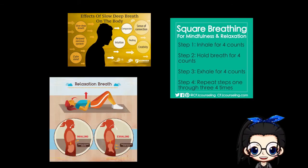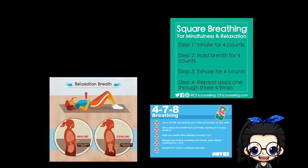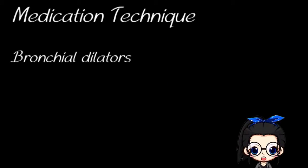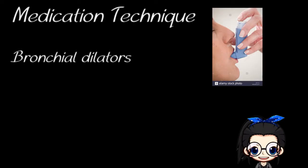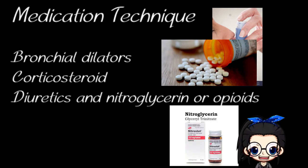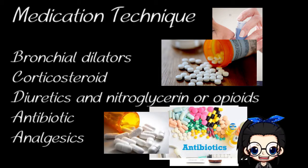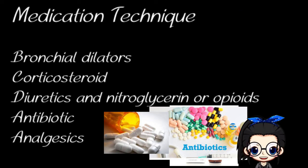Assist the client with relaxation breathing techniques to decrease anxiety that occurs with feeling short of breath. Medication therapy can also be included, such as bronchodilators to open up the airways, corticosteroids to decrease inflammation, diuretics and nitroglycerin or opioids to decrease pulmonary congestion, antibiotics for infection and sedation, and analgesics to decrease anxiety, agitation, and pain. These are all specific interventions that can help the patient in acute respiratory failure.